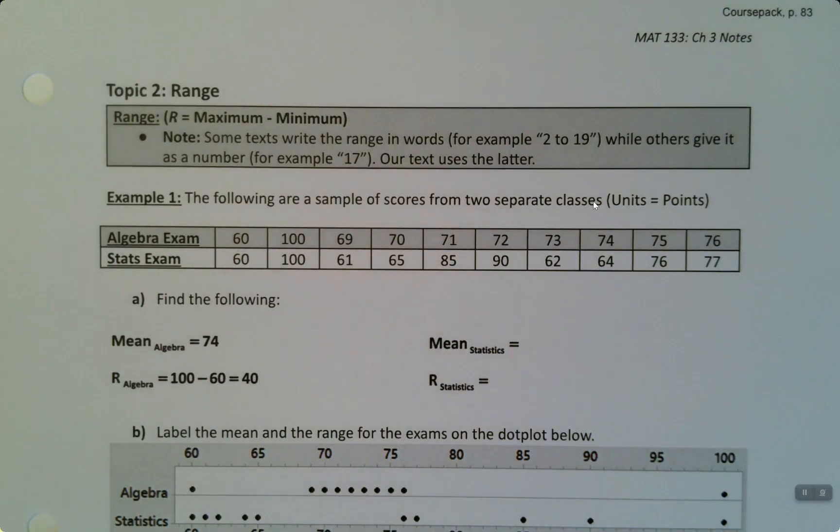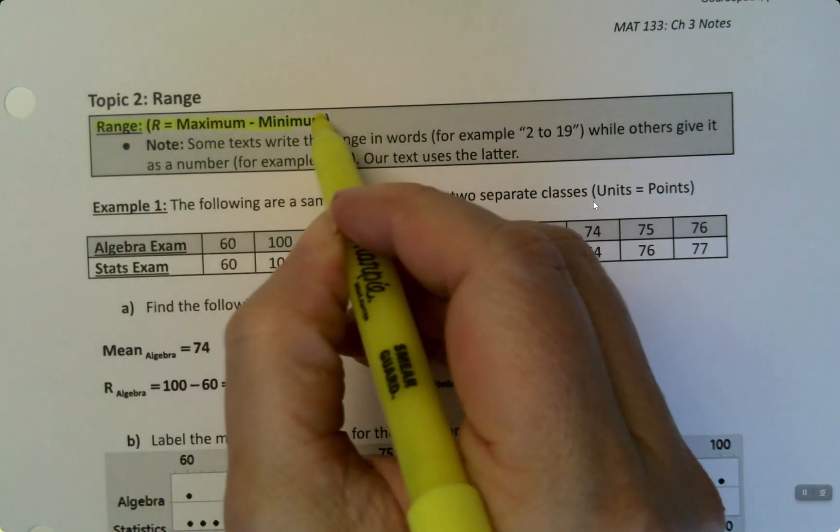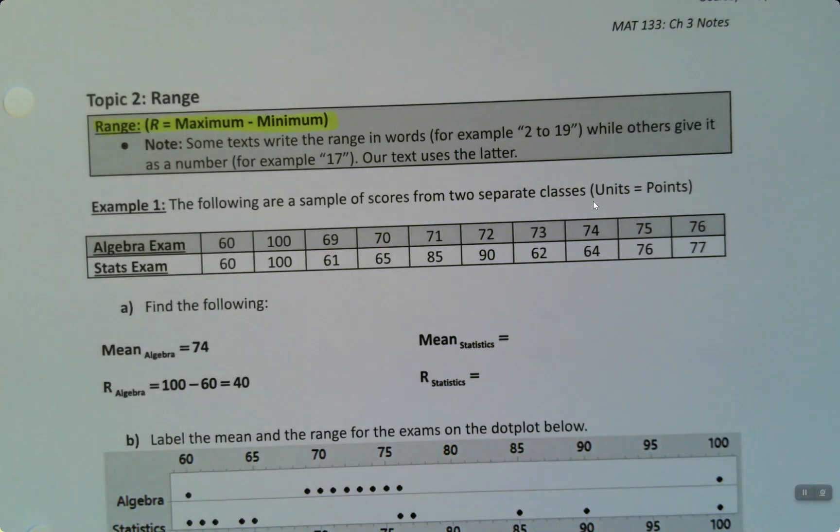Now, range has a very simple formula. It is the maximum minus the minimum. That's your formula, simple as that. So you take your max minus your min. Now, some textbooks will write them in words. They'll say from 2 to 19, whereas others will actually just give the number, and our textbook is the latter. We'll just give the number. It's the distance between the highest and lowest values.